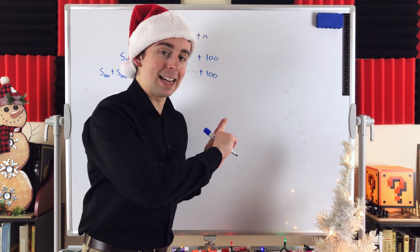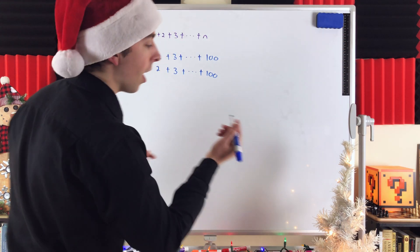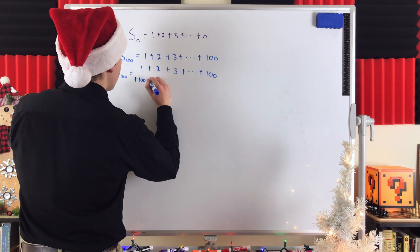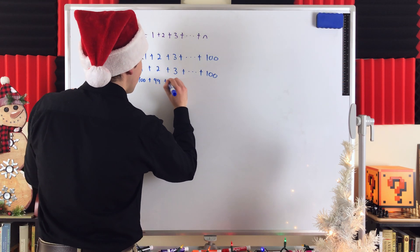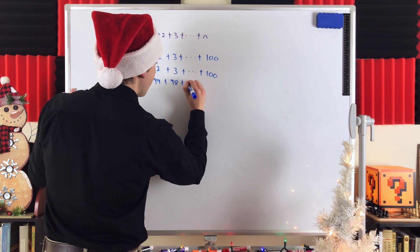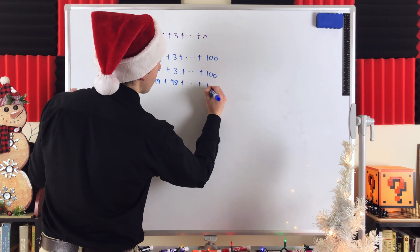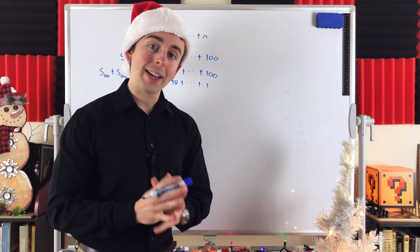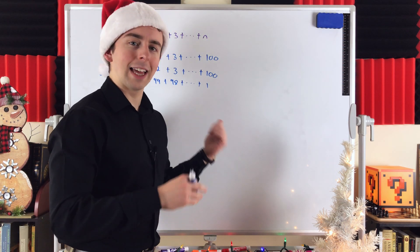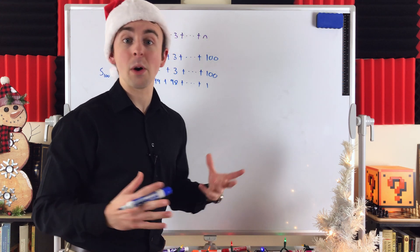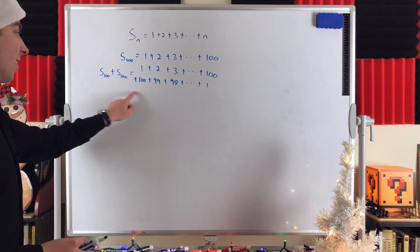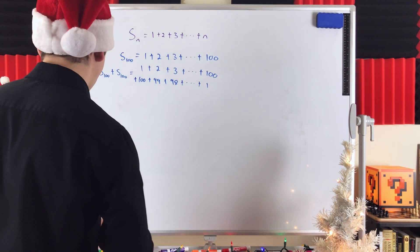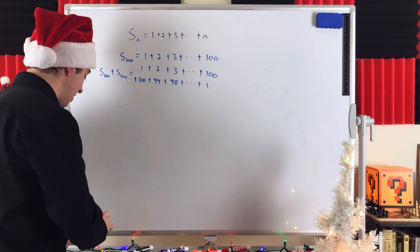We're going to write this second copy in reverse order, going from 100 down. So that's plus 100 plus 99 plus 98 and so on all the way down to the 100th term, which is plus 1. The order doesn't matter because addition is commutative, so we're allowed to move these numbers around however we please. Writing the sum like this is going to let us see a pattern that is very beautiful and ends up being pretty easy to work with.